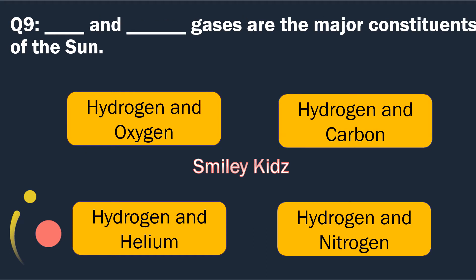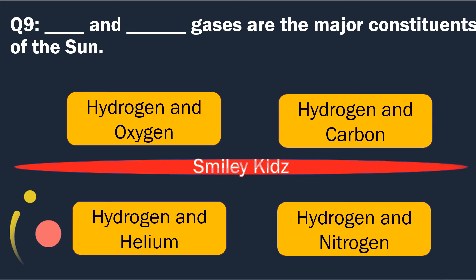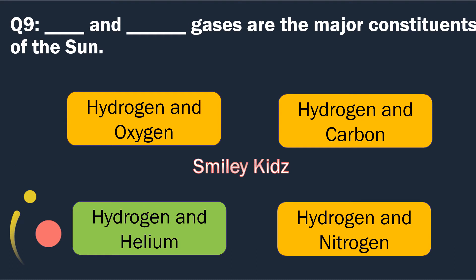Question number 9. Blank and blank gases are the major constituents of the sun. Options are: Hydrogen, Oxygen; Hydrogen and Carbon; Hydrogen and Helium; and Hydrogen and Nitrogen. The right answer is Hydrogen and Helium. Hydrogen and Helium gases are the major constituents of the sun.